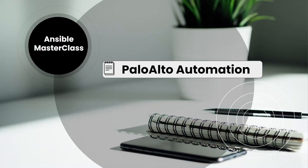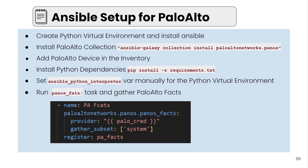In this section, we'll see how to automate Palo Alto firewall tasks using Ansible. This is the first video, where we'll see how to set up Ansible for running the Palo Alto module.